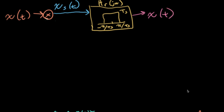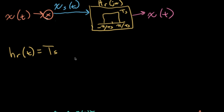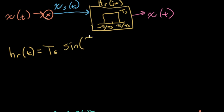So let's think about what the impulse response of this filter would be. I'd have TS sitting out in front — that's from this constant — and then if I look this up in the Fourier transform table, we had a table entry calling this something like omega naught. If we look up in that table, we get sine of omega naught times t over π t, where omega naught is π over TS.